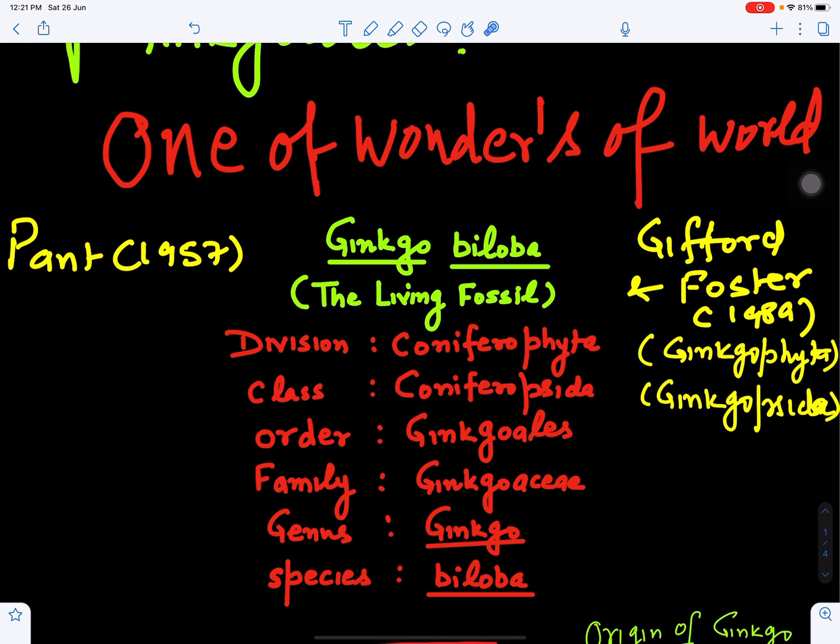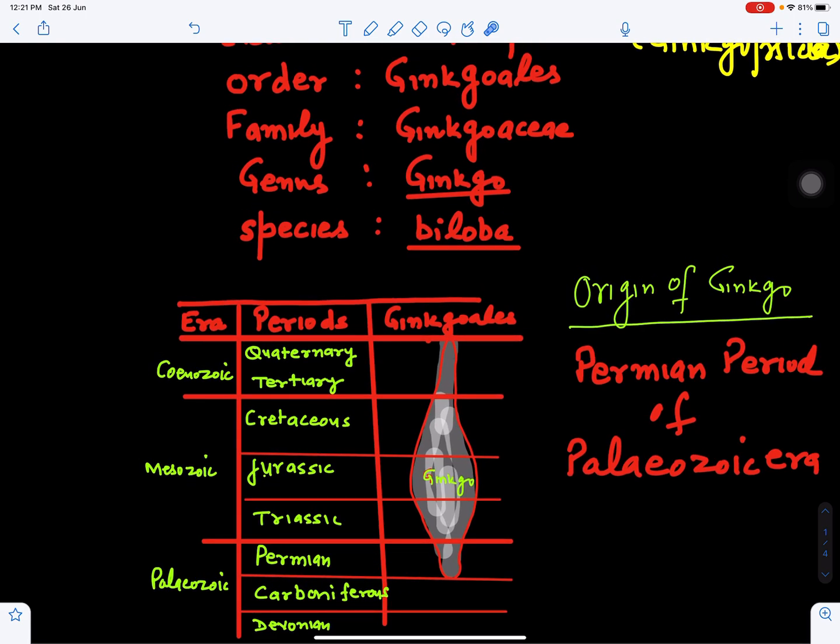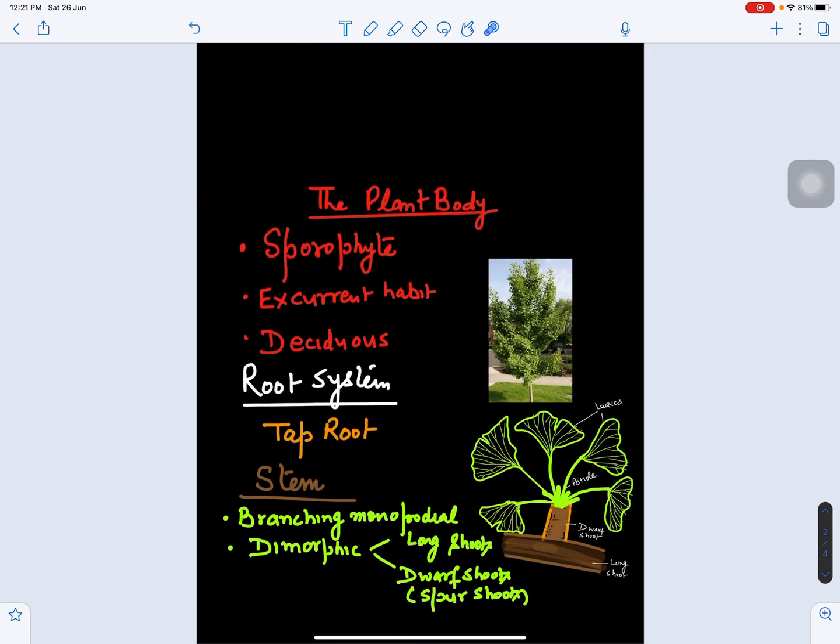If we see the origin of Ginkgo, this is the geological time scale with eras Cenozoic, Mesozoic, and Paleozoic, and periods Quaternary, Tertiary, Cretaceous, Jurassic, Triassic, Permian, Carboniferous, and Devonian. Ginkgo originated from the Permian period of the Paleozoic era, flourished well in the Mesozoic era, and has lived up to the Cenozoic era.